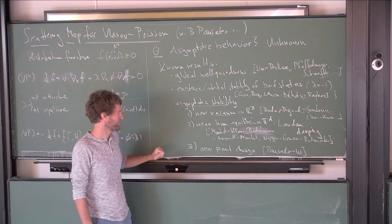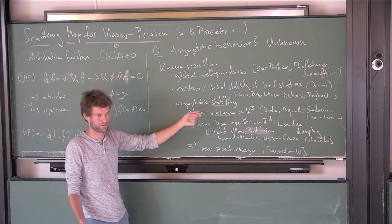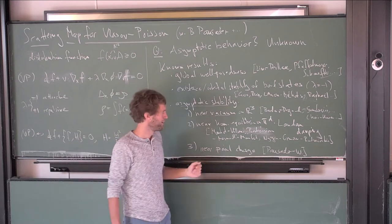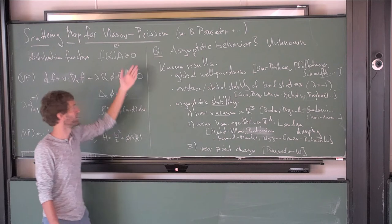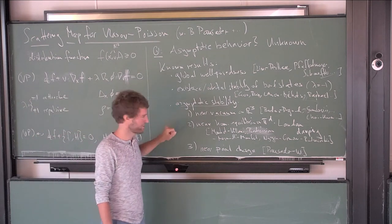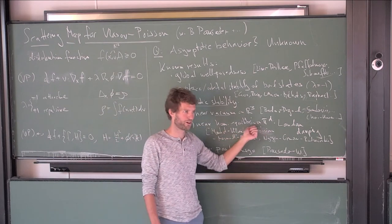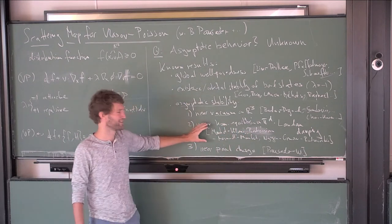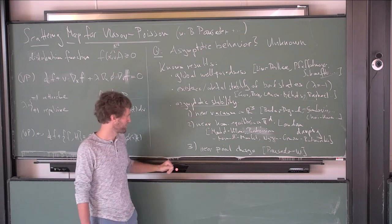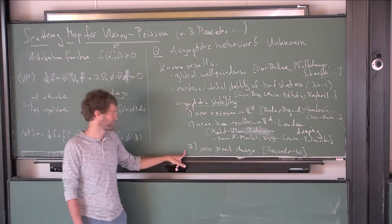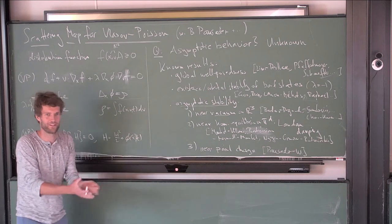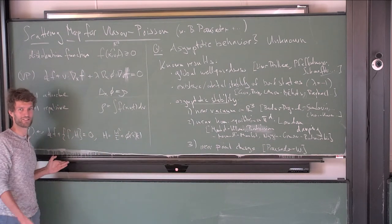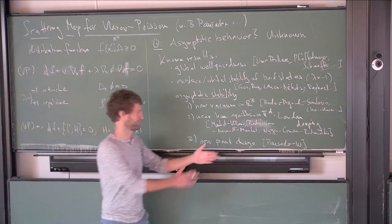In the nonlinear setting with the Coulomb potential, there are really three results. One is behavior near vacuum — small dilute gases — starting with Bardos-Degond, with sharp decay rates recently completed by myself, Bruno Pausader, and various others. Then there's the more famous Landau damping on tori, a slightly different setting. Lastly, a work of myself with Bruno Pausader studying a point charge in a radial setting — like an atom surrounded by a cloud of molecules.